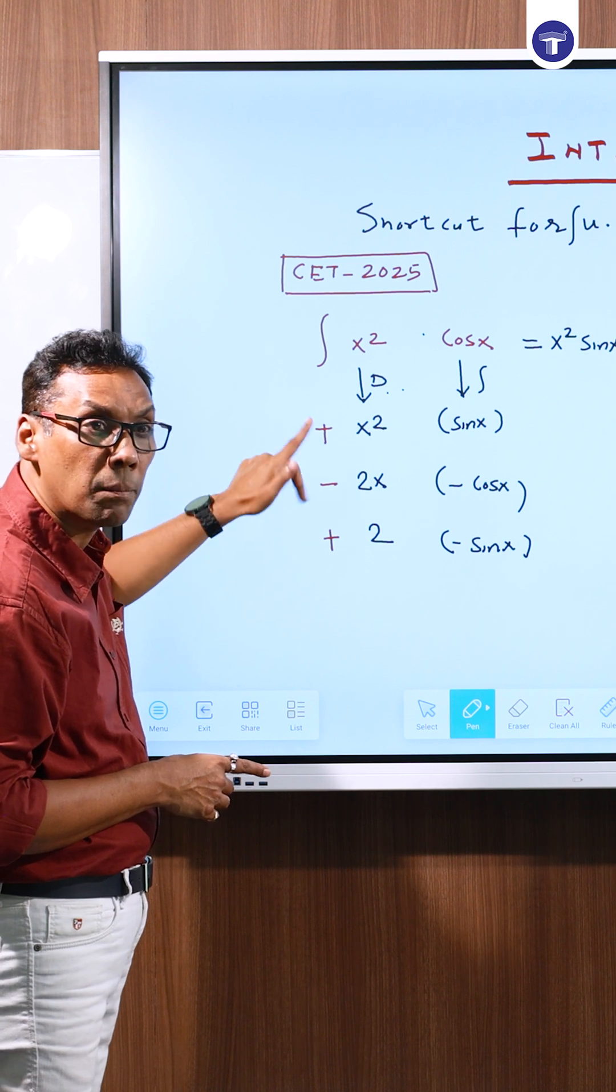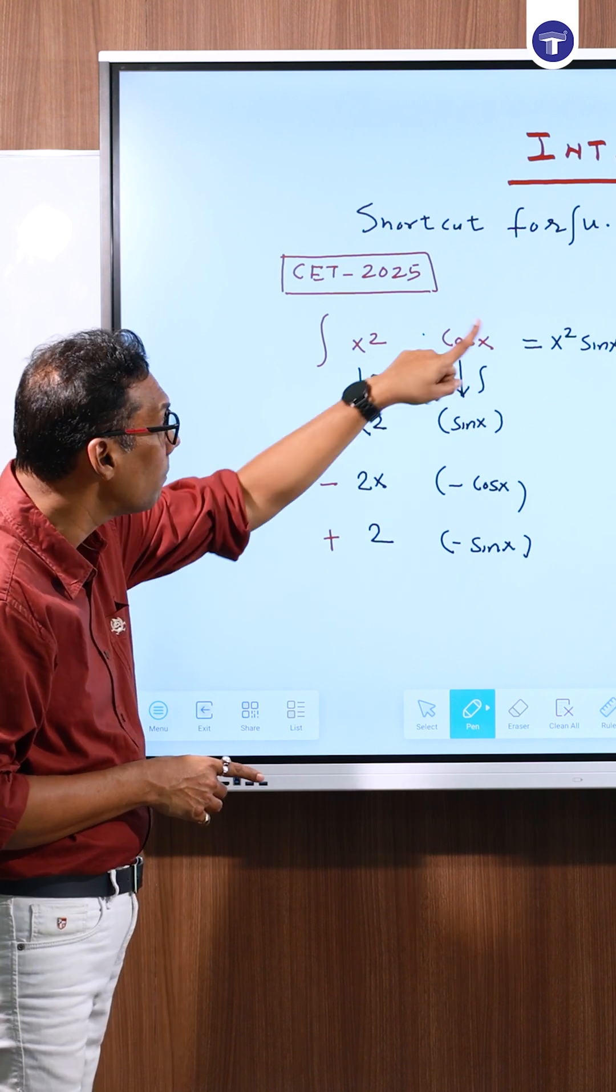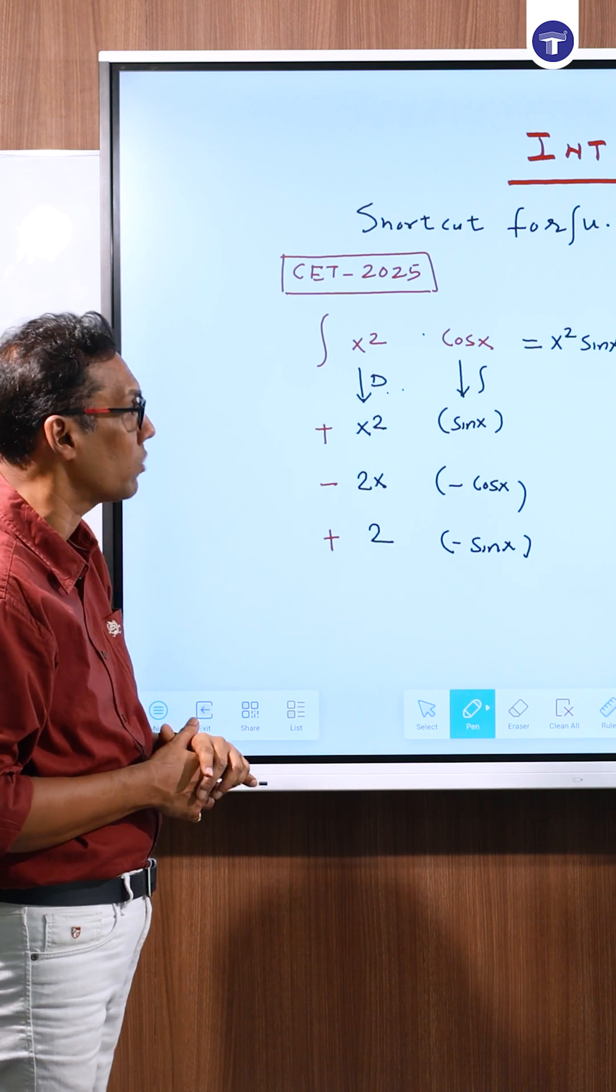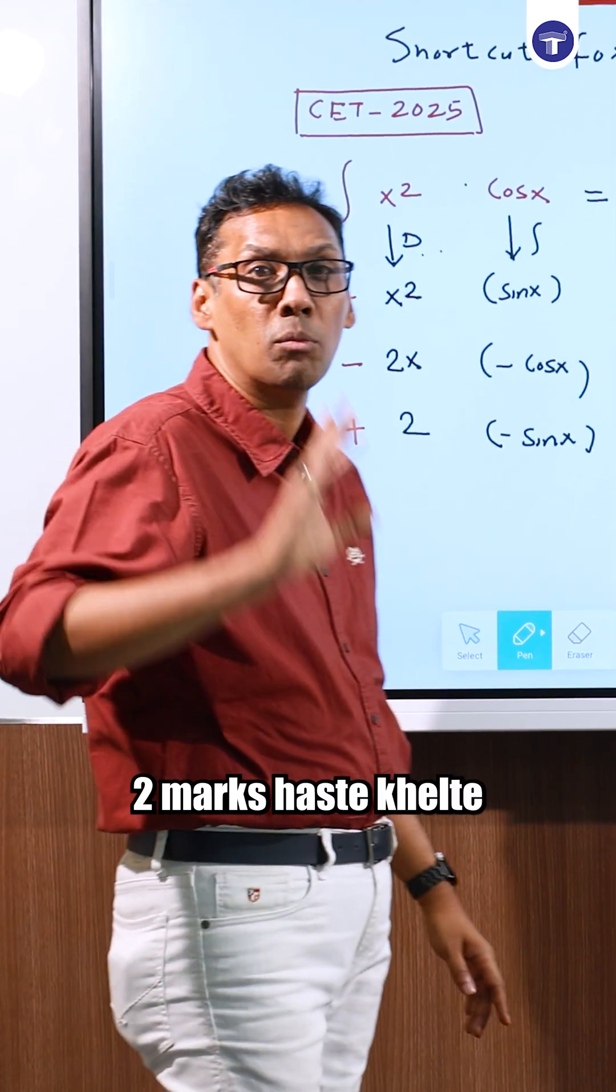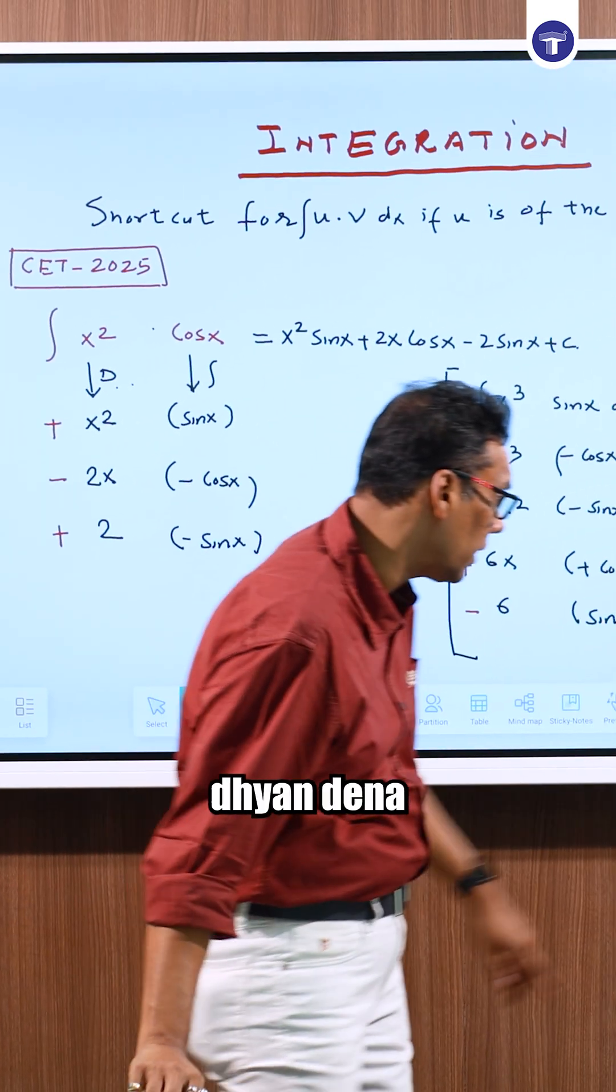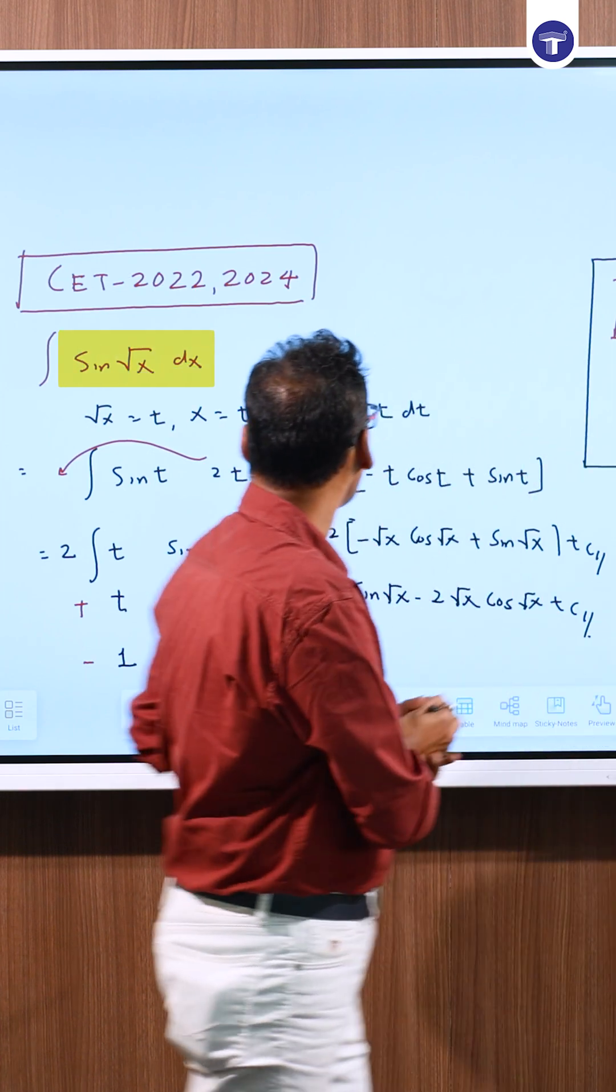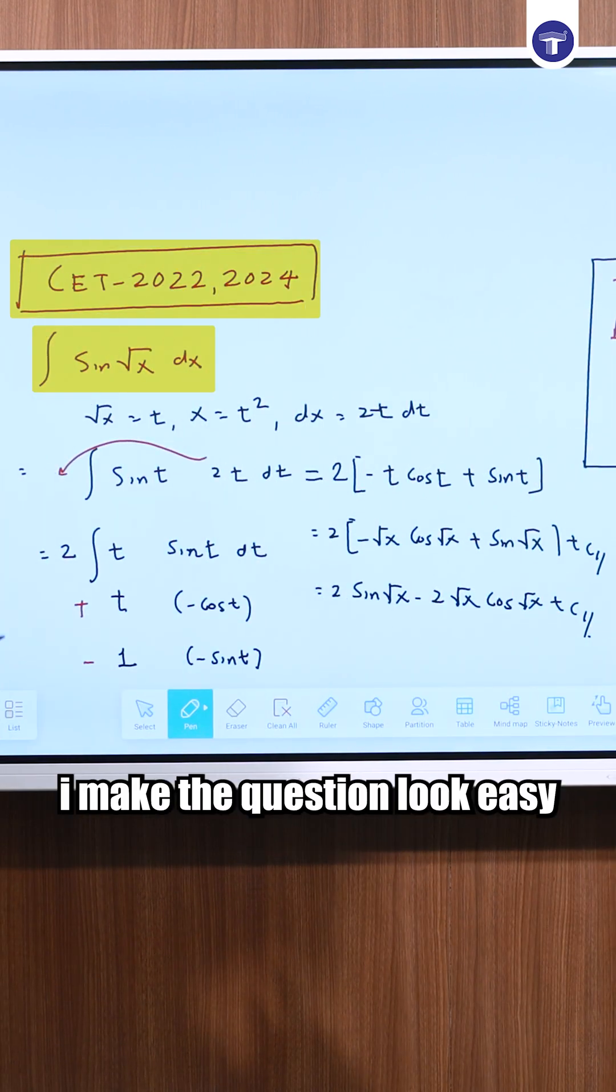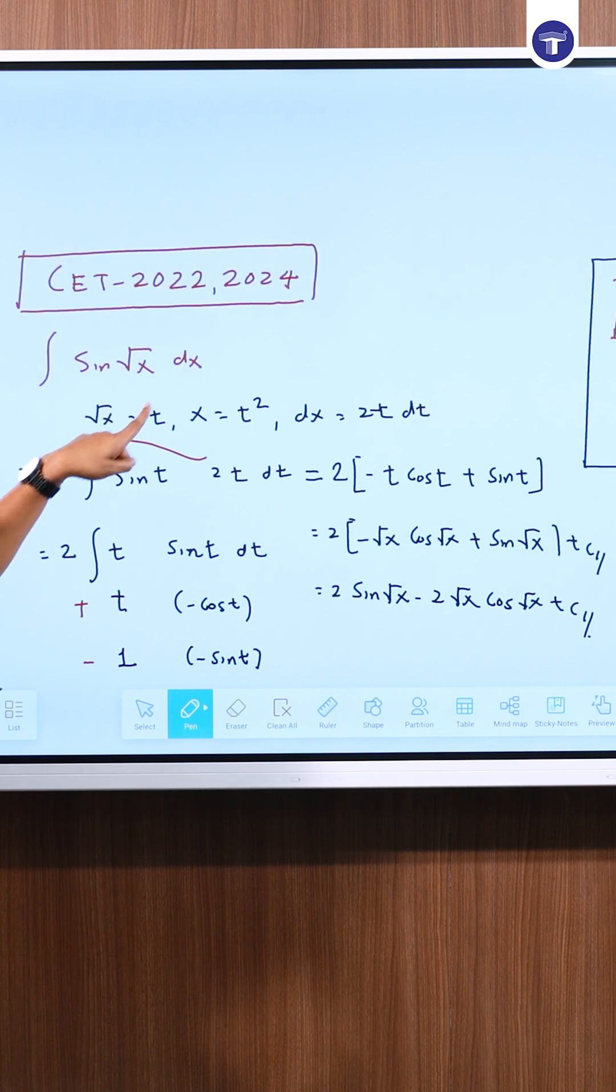CET 2022-2024 example: Suppose I have integral sin√x dx. To make the question easy, let x = t², so dx = 2t dt. This becomes integral of 2t sin t dt. The first term is t.